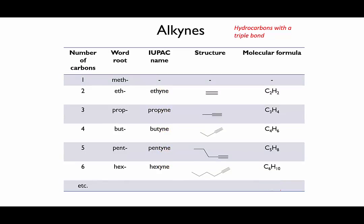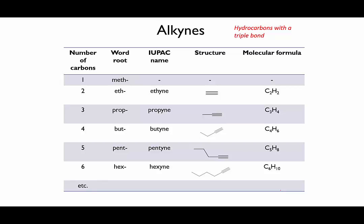Finally, for this video, we'll look at the alkynes. If the hydrocarbon molecule has a triple bond, it's known as an alkyne. Again, it's the suffix in the name — the end part — that tells you what kind of molecule you're dealing with, while the prefix tells you how many carbons there are. Can you see what the formula would be for an alkyne with N carbons?